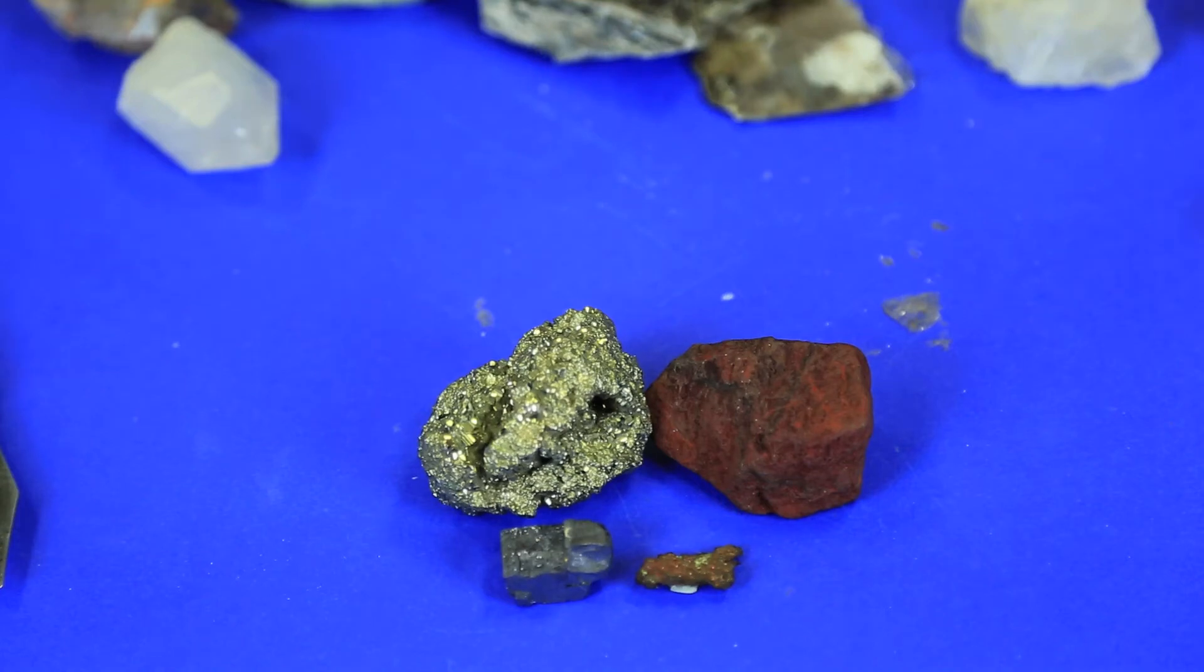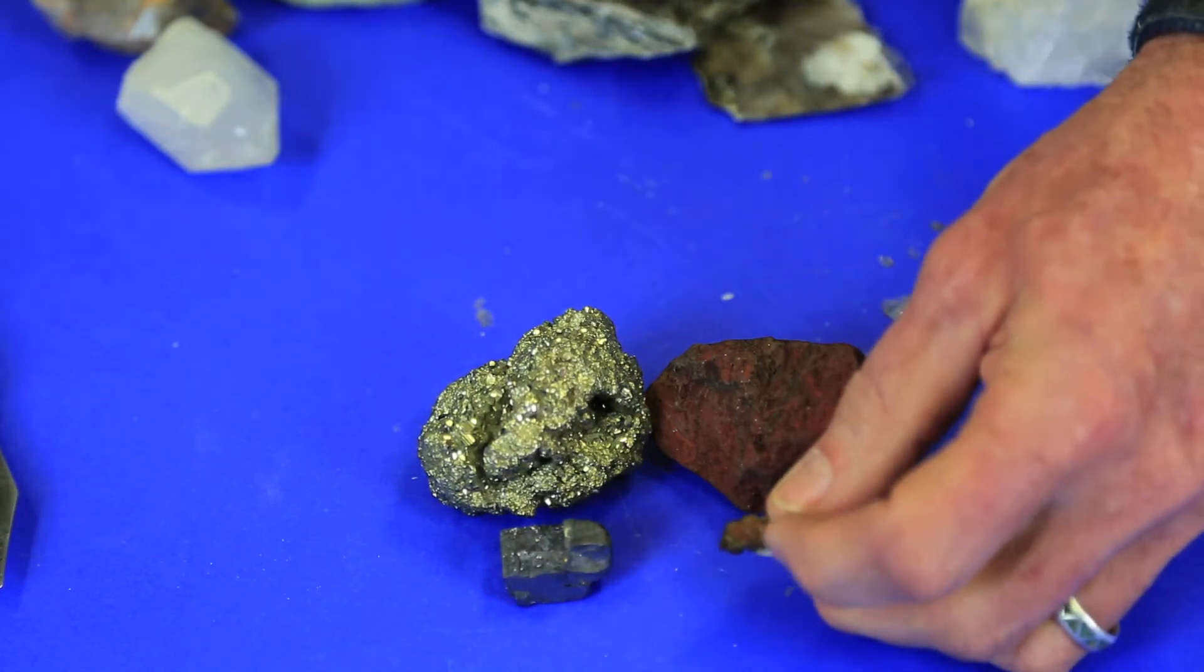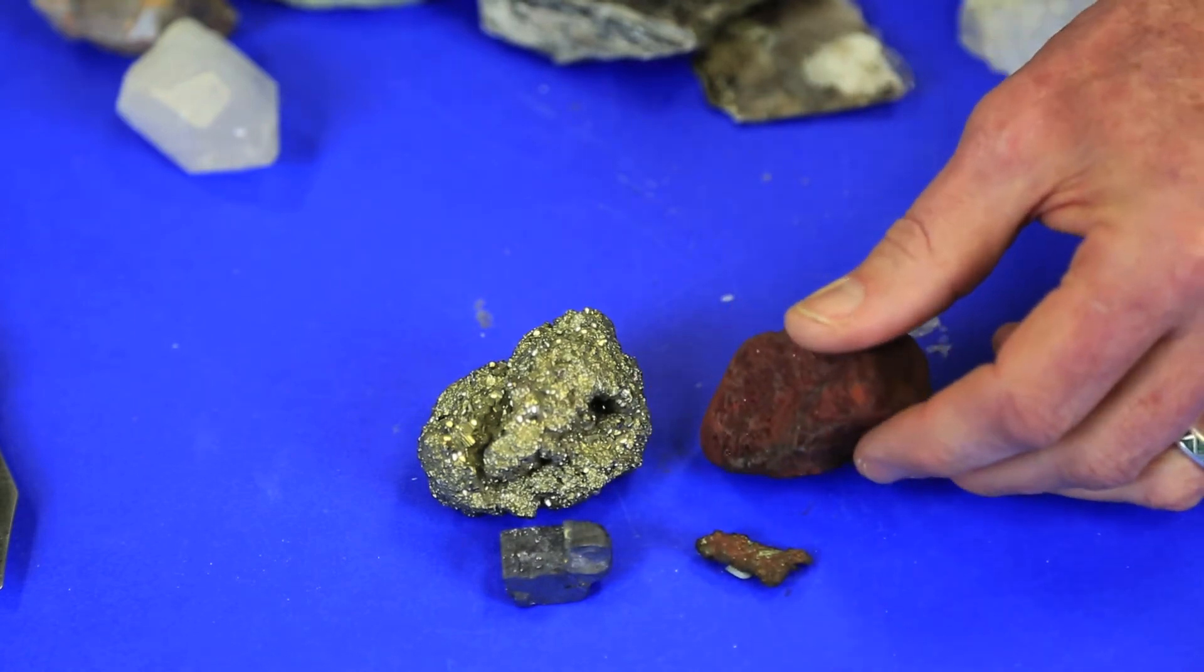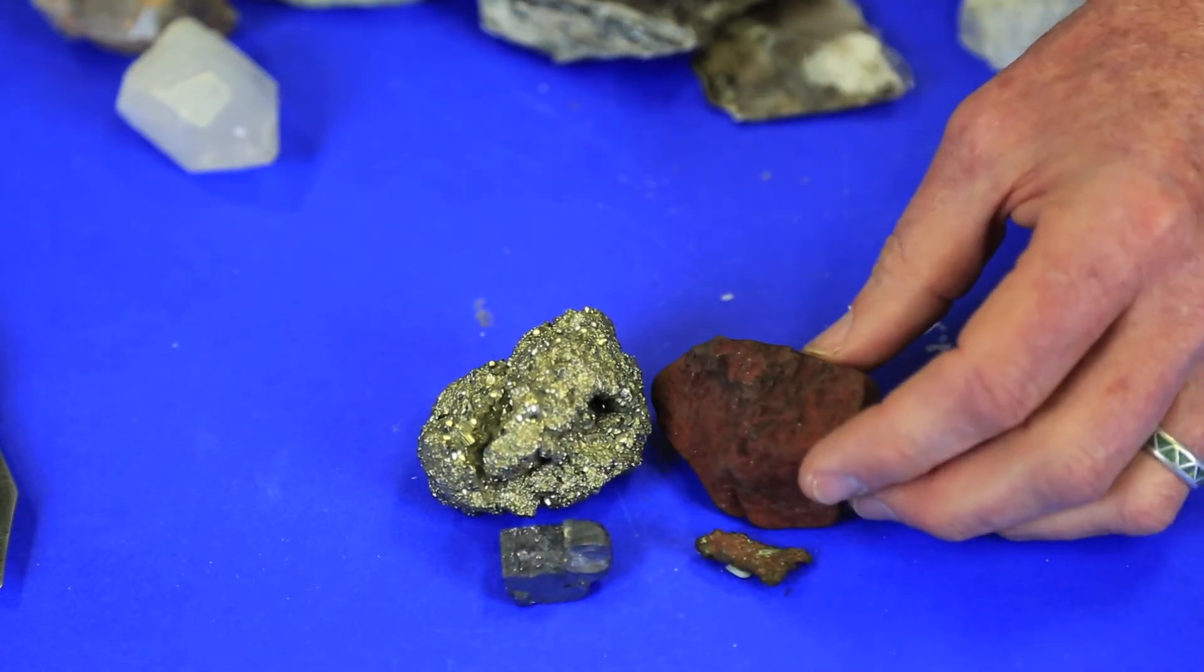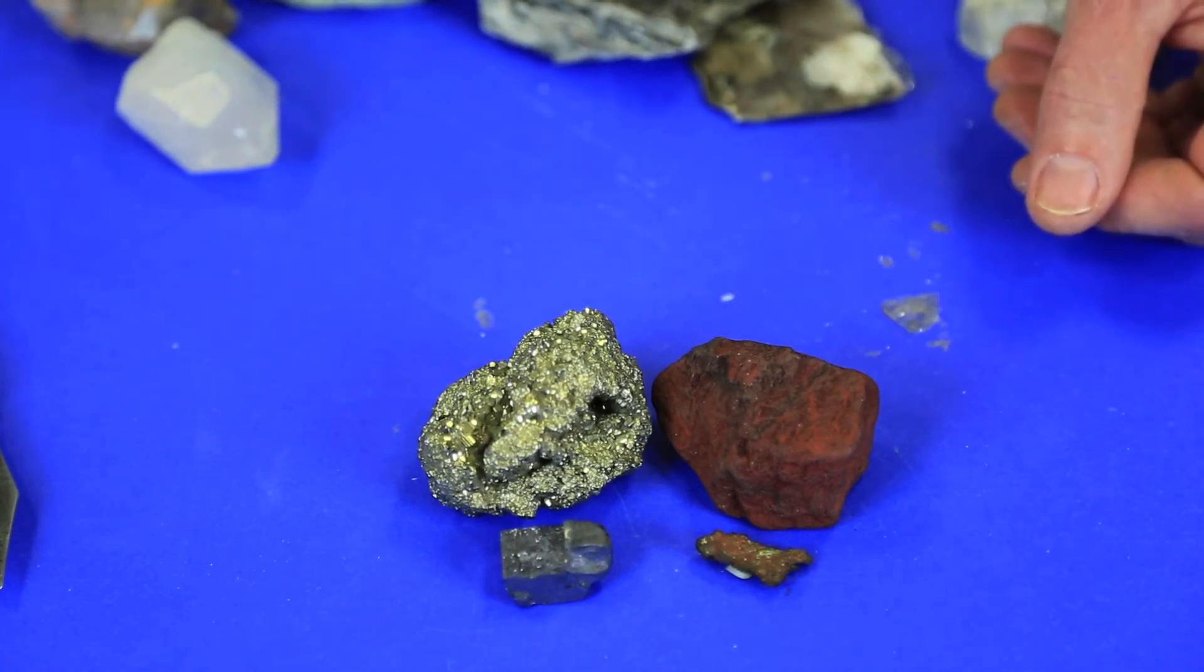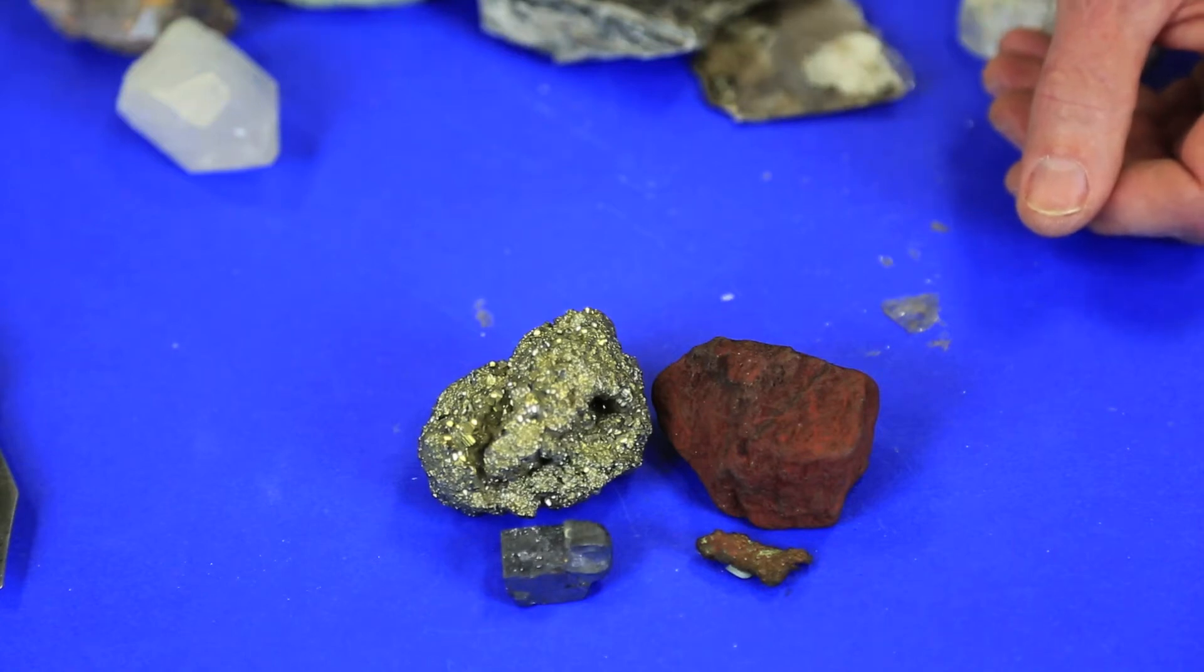A submetallic luster on the other hand may be oxidized. It might have iron in it or copper that has gone through a reaction with atmospheric oxygen and change the luster from a bright and shiny one to a dull or oxidized submetallic luster. So we'll be making some observations about luster.